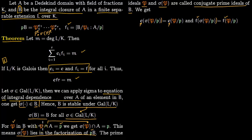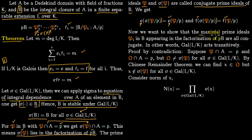So if P divides p, then σ(P) also divides p. This means that if all prime ideals above p are conjugate to each other, then all of them have the same e's and the same f's, and we are done. So we want to show that all maximal prime ideals Pᵢ in B appearing in the factorization of p are conjugate to each other — in other words, that the Galois group acts transitively on these primes.